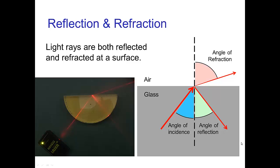Refraction Part 2. When light rays reach the interface between two materials, say a light ray passing through glass and reaching the surface of the glass, some of the light is reflected from that surface, and some of the light passes through the surface and is refracted. The angle of reflection equals the angle of incidence, and the angle of refraction depends on the optical properties — the index of refraction — of the two materials.